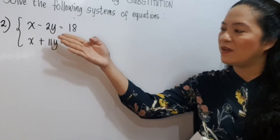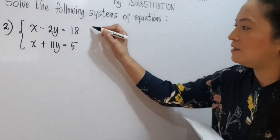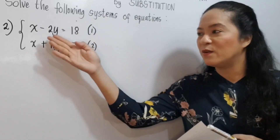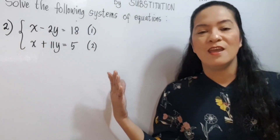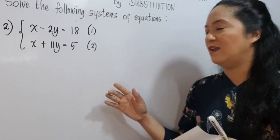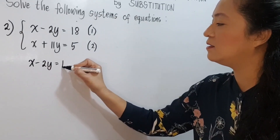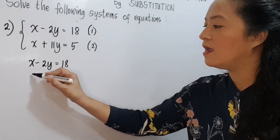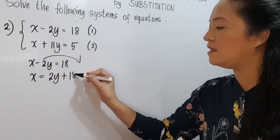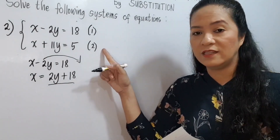Example number 2: x minus 2y equals 18, and x plus 11y equals 5. This is our first equation and this is our second equation. We are lucky here because both equations contain a variable with a coefficient of 1, so we can use either one. Let's use the first equation: x minus 2y equals 18. Solving for x in terms of y, x is equal to 2y plus 18.